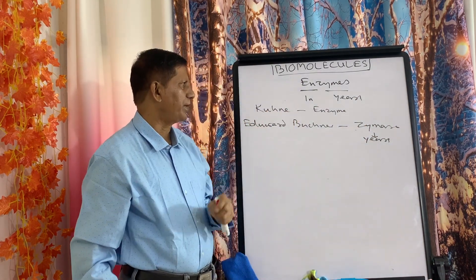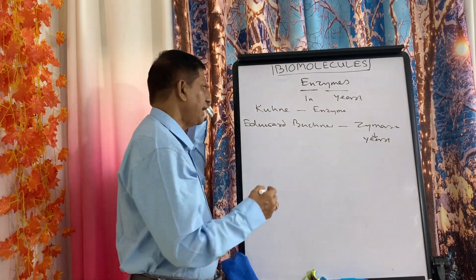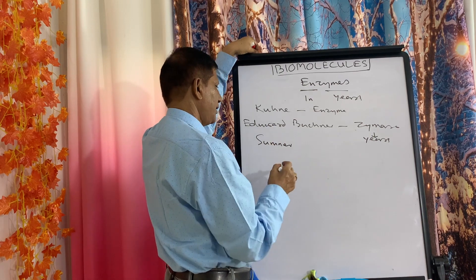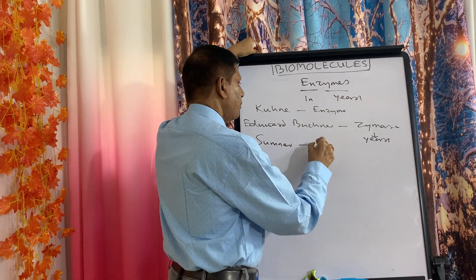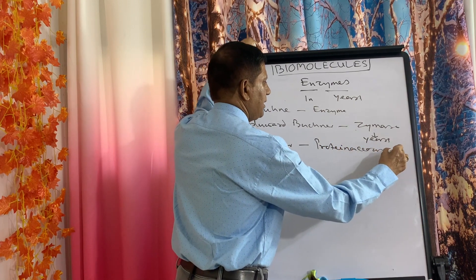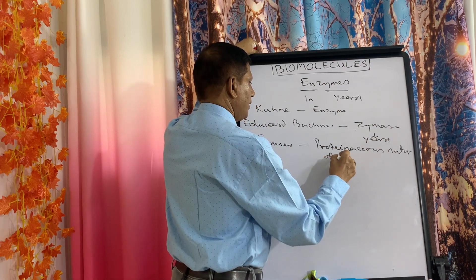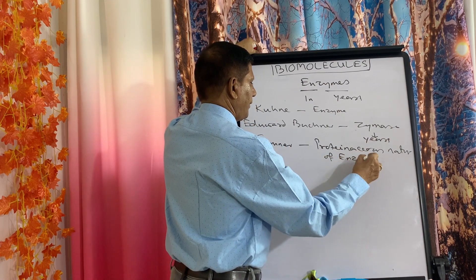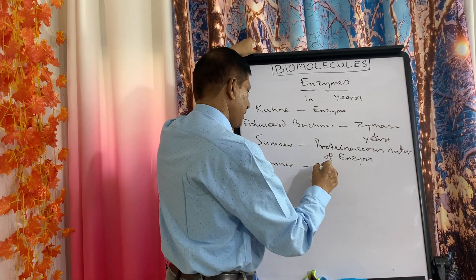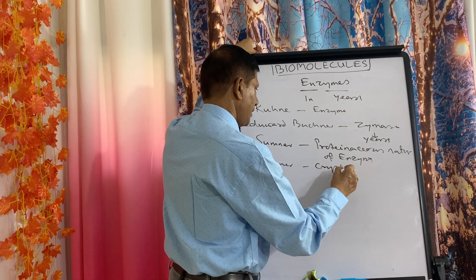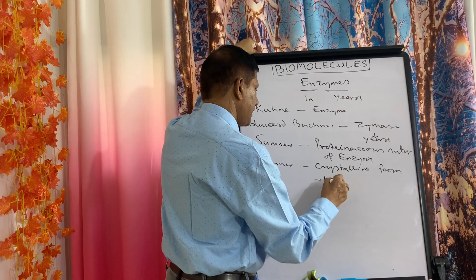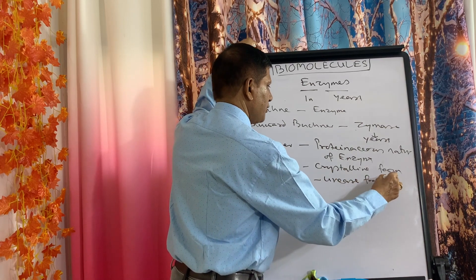According to the name given by Kühne, another scientist, Sumner, stated that all enzymes are proteins — establishing the proteinaceous nature of enzymes. Sumner also crystallized urease enzyme and obtained it in crystalline form from Jack bean.